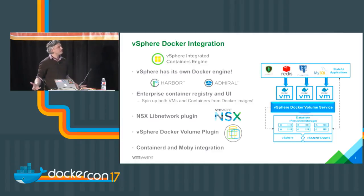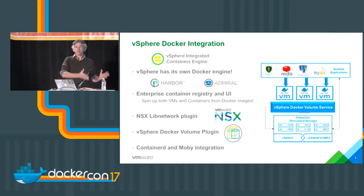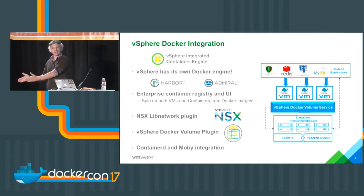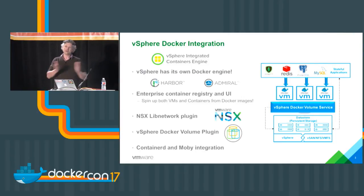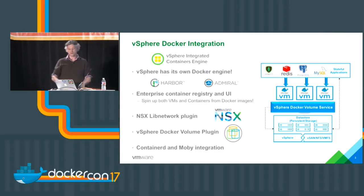What ties all these things together? Fundamentally, it's bringing the best of Docker to vSphere and the best of vSphere to Docker. Bringing the best of Docker to vSphere means we're taking the Docker model, Docker workflow, Docker grammar, and Docker image format and making that work directly with vSphere through VIC Engine. And the best of vSphere to Docker means we're taking all the great vSphere infrastructure pieces — networking and storage — and allowing you to connect those directly to a Docker container.